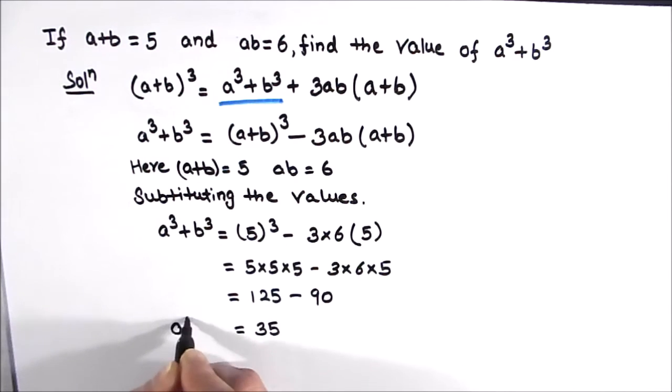So a cube plus b cube will be equal to 35.